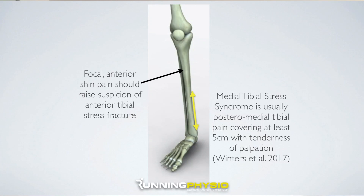This is about detecting bone stress injuries, particularly in the shin and the tibial region. Let's start by talking about two particularly important ones we need to recognize. In most runners that I see, one of the main causes of shin pain around the tibial region would be medial tibial stress syndrome. It's quite important that we can recognize some of the differences between this and an anterior tibial stress fracture.